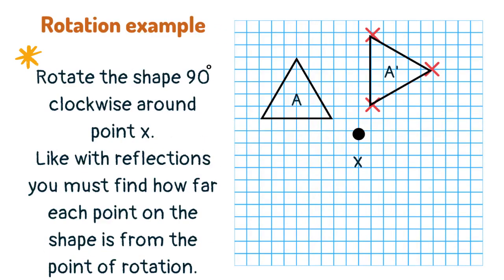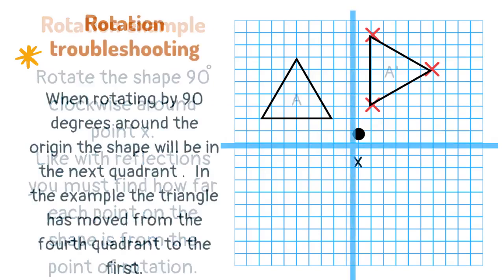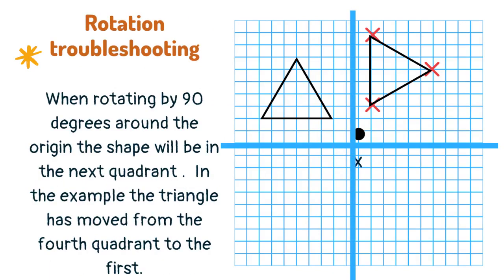Rotations are very similar to reflecting in a diagonal, and you must invert the x and y directions of travel. This moves the shape by 90 degrees. When rotating by 90 degrees around the origin, the shape will be in the next quadrant. In the example, the triangle has moved from the fourth quadrant to the first.